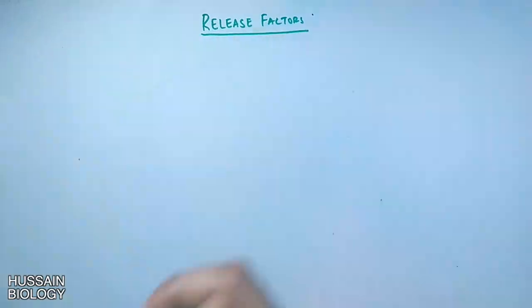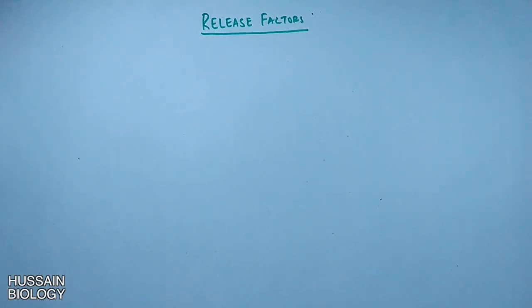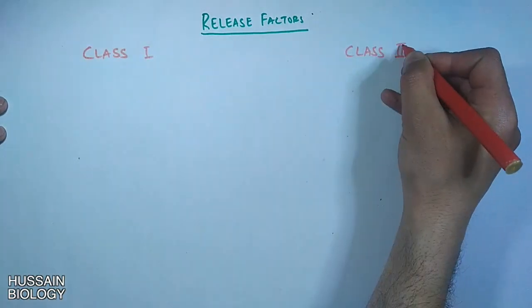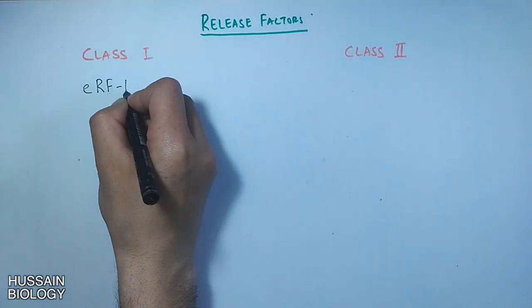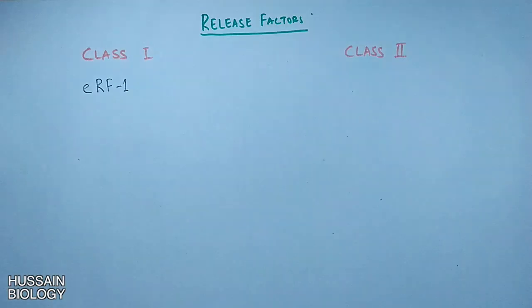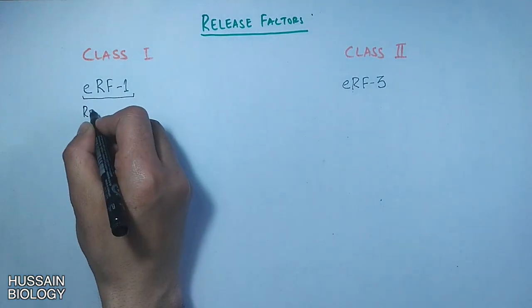We have two classes of release factors in eukaryotes, class 1 and class 2. In class 1 we have ERF1 factor, and in class 2 we have ERF3.